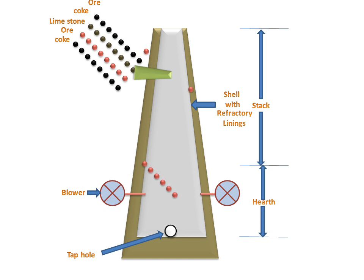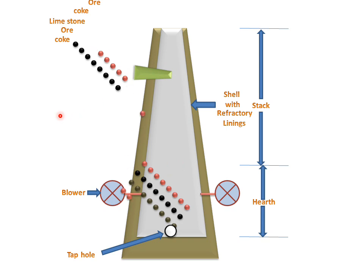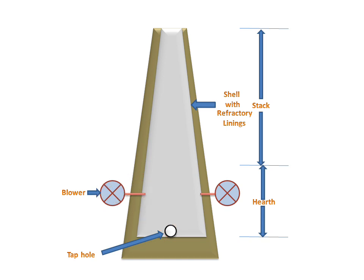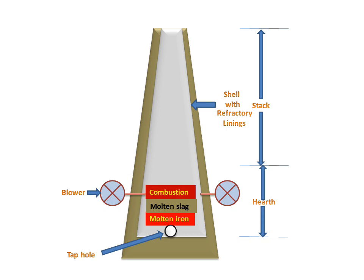This charge door will be opened and layer by layer, ore, coke, and limestone will be placed in the furnace. Three layers will then be formed in the furnace: molten iron, molten slag from the combination of limestone with the impurities of the ore.